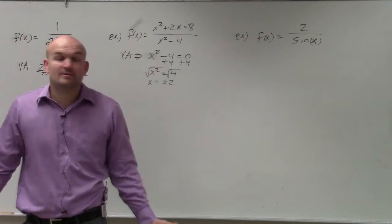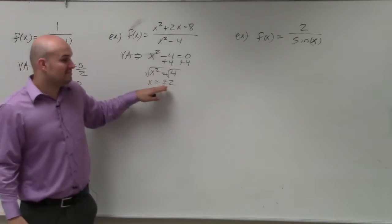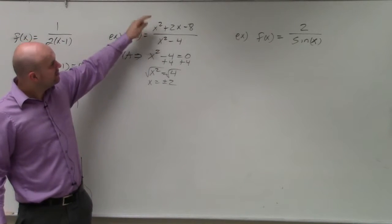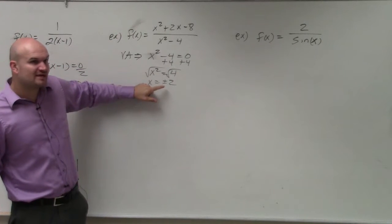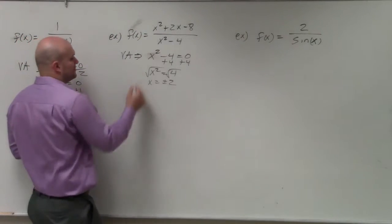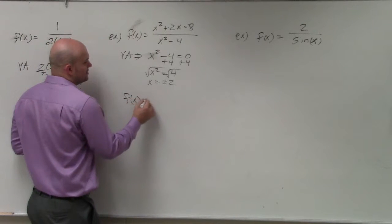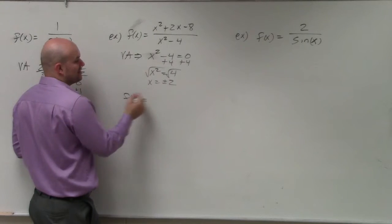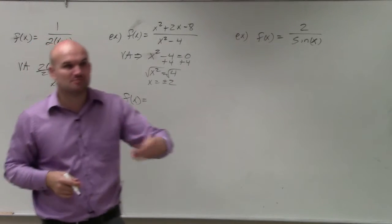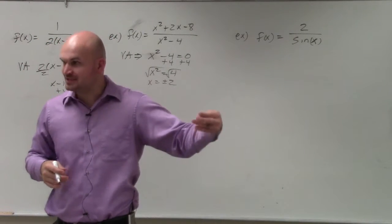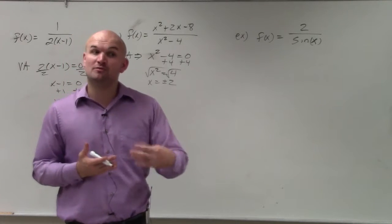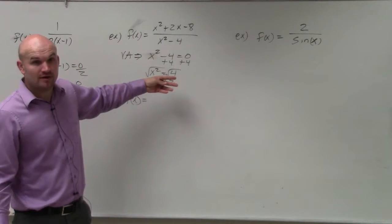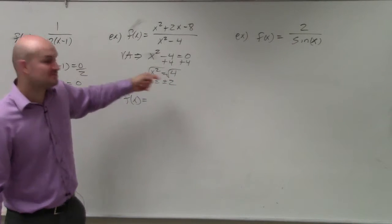So now we know my asymptote could be plus or minus two. However, I'm not sure if these are both asymptotes or not. So what I'm going to do is factor my expression — factor the numerator and factor the denominator. Because remember, vertical asymptotes are non-removable discontinuities. So if we have a removable discontinuity, which could be plus or minus two, or both, then those are not asymptotes.